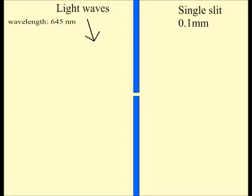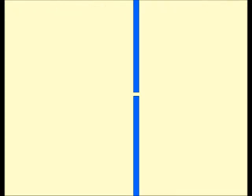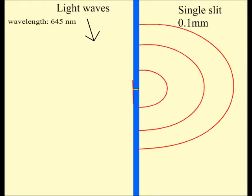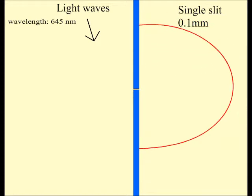On the other hand, wavelengths of light are really small as compared to sound waves. A red light has a wavelength of about 645 nanometers. Therefore, the size of the gap will also have to be about the size of the wavelength for the wave to diffract.